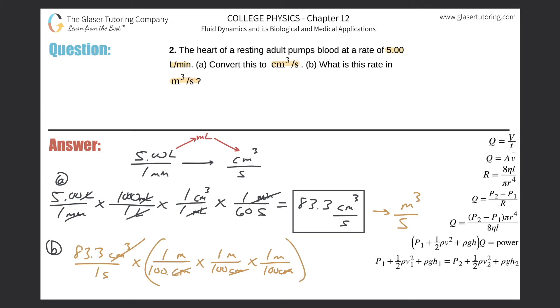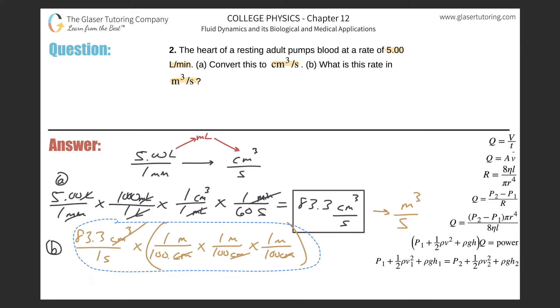Instead of doing it that way, it could just be 83.3 centimeter cubed over one second, times one meter for every hundred centimeters, and then just cube this thing. Either way you're going to get the same answer. Take that value 83.333... and divide by 100 cubed.